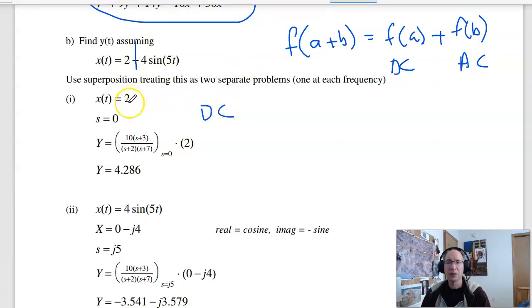So the first part for DC analysis. The input is 2, s equals 0. Everything is e to the st, e to the 0t is 1, a constant. Here's the gain at s equals 0 times the input of that frequency gives you the total output, or the output of DC.